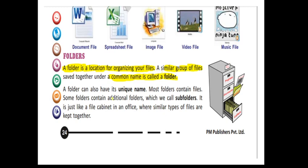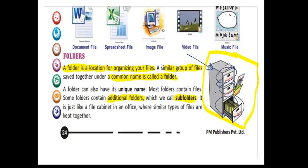Inside a folder we can also contain additional folders. If a folder is containing an additional folder, that additional folder is called a subfolder. Imagine the concept of a folder like an office cabinet. If this is the main folder, inside it there can be many subfolders. These are called subfolders, whereas the main thing is called the folder.